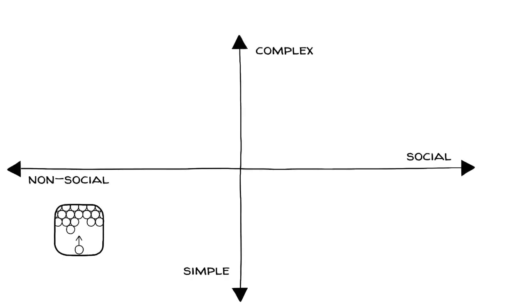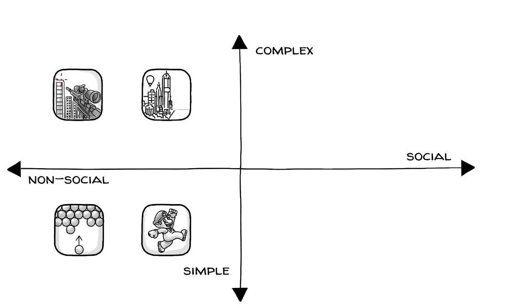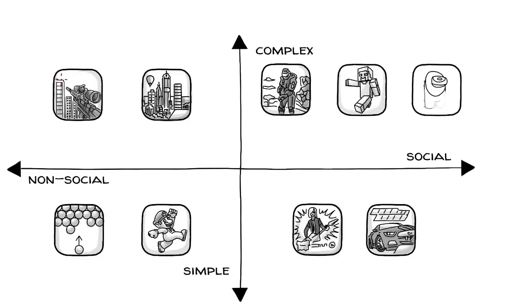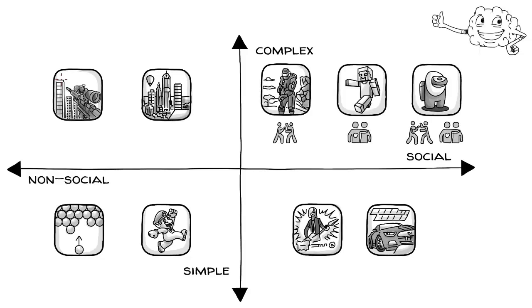Simple single-player games include puzzles and jump and run games like Super Mario. Complex, non-social games include shooters like Far Cry or simulations like SimCity. Then there are simple multiplayer games like Guitar Hero or Need for Speed, and games that are complex and social such as Halo, Minecraft, or Among Us. Games can be competitive, cooperative, or both. Complex multiplayer games are usually most effective for learning.